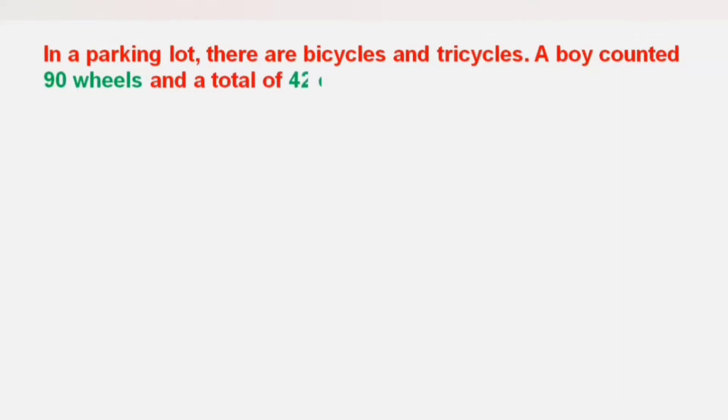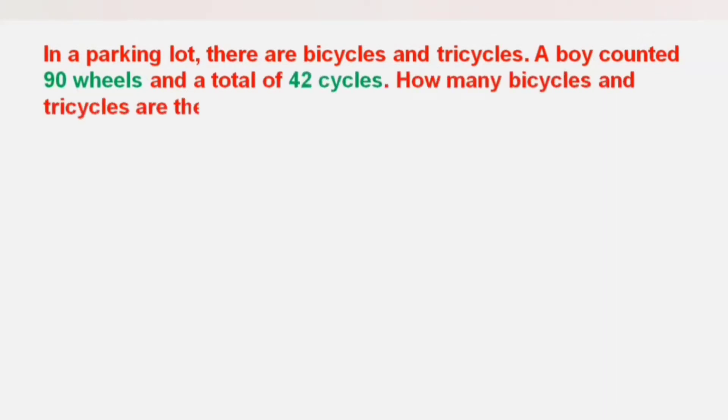The question is: in a parking lot there are bicycles and tricycles. A boy counted 90 wheels and a total of 42 cycles. How many bicycles and tricycles are there? This is our question.